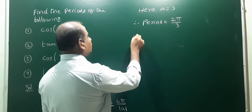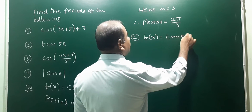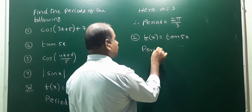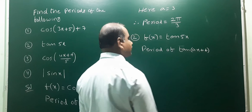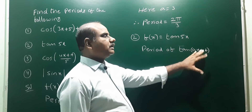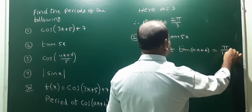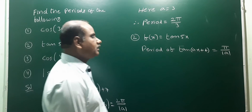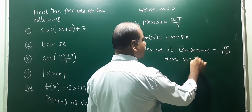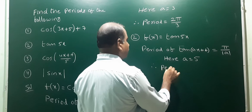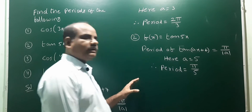Second one: f(x) = tan(5x). The formula for the period of tan(ax + b) is π divided by mod a. Here, a is equal to 5, so the period is equal to π divided by mod(5), which is π/5.